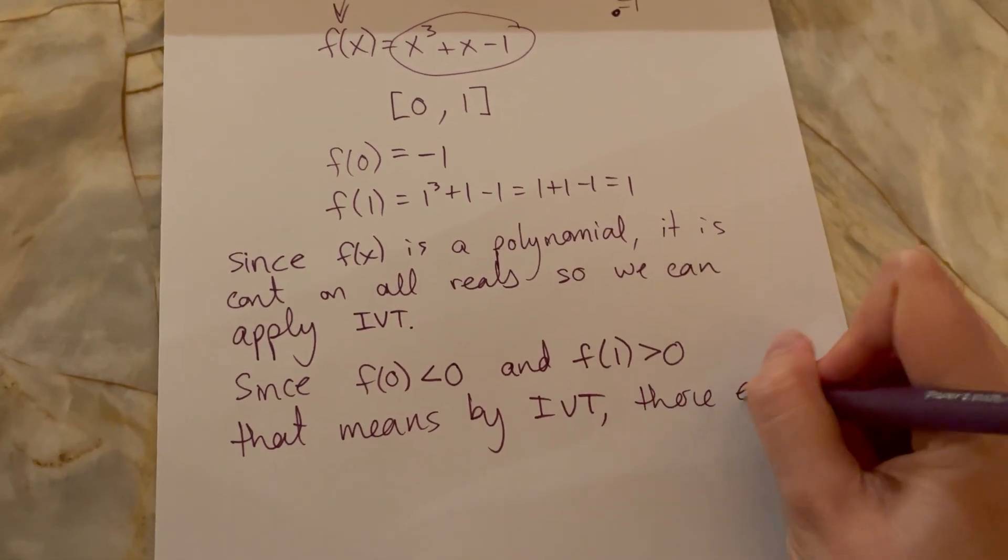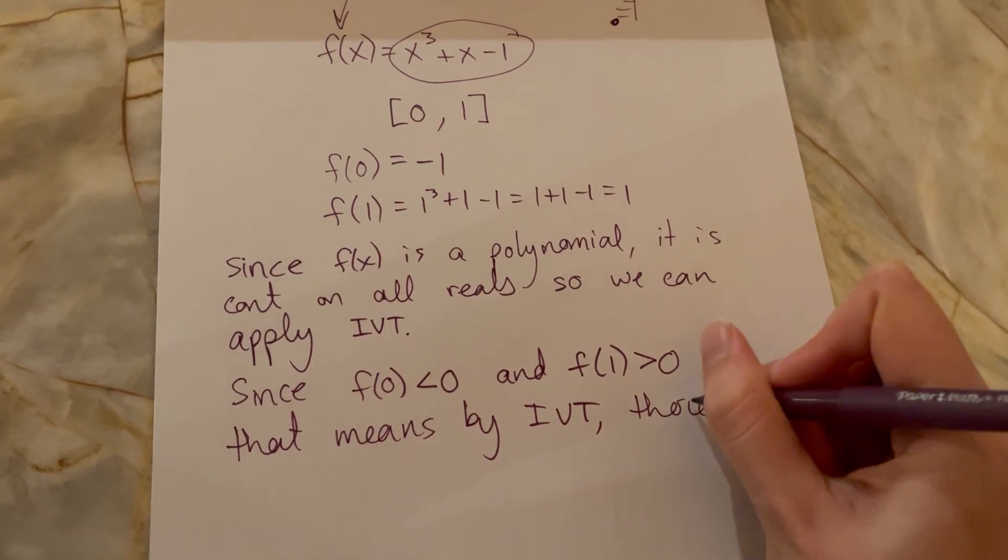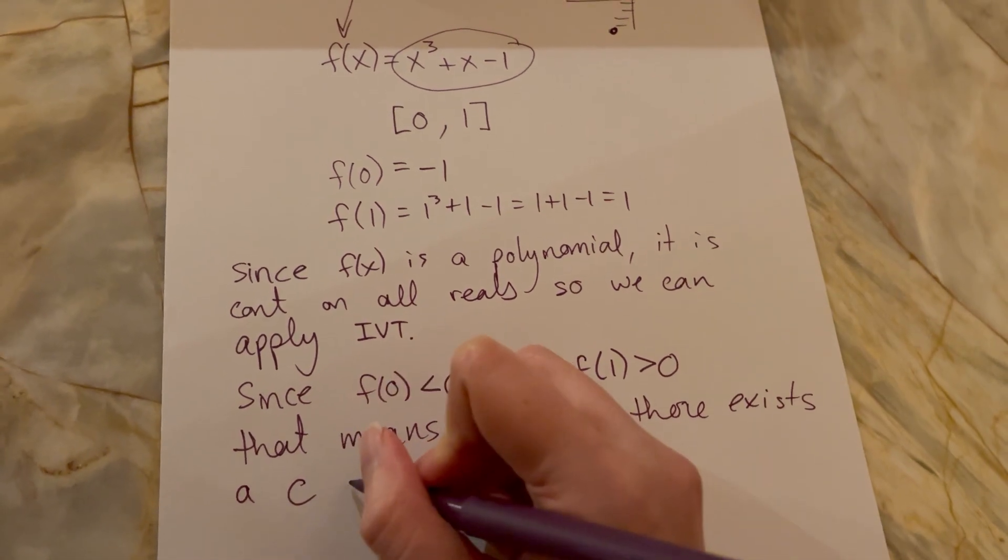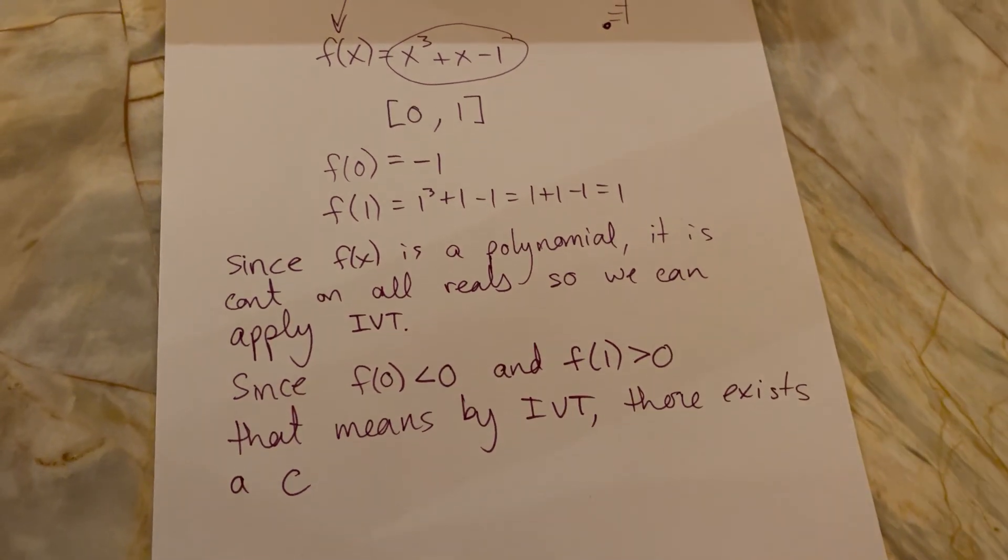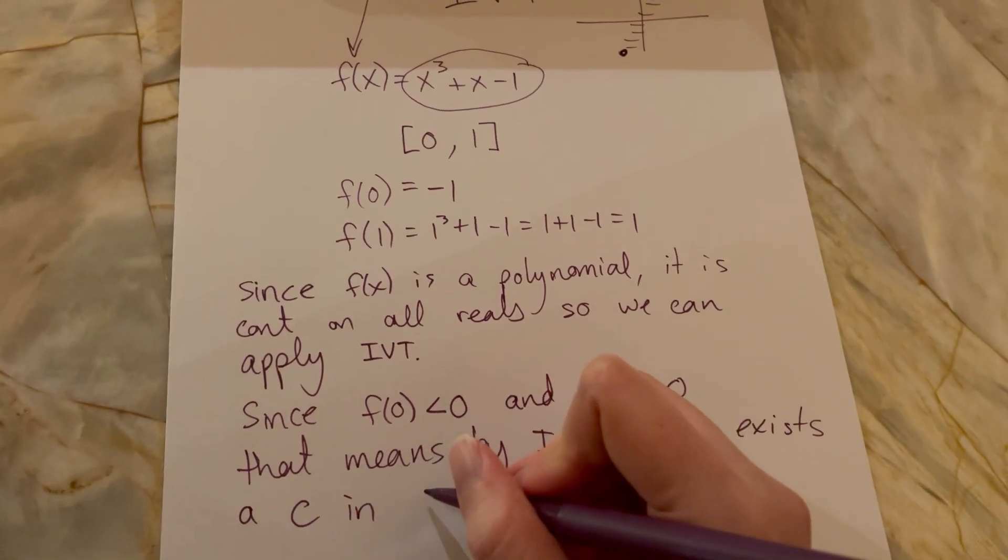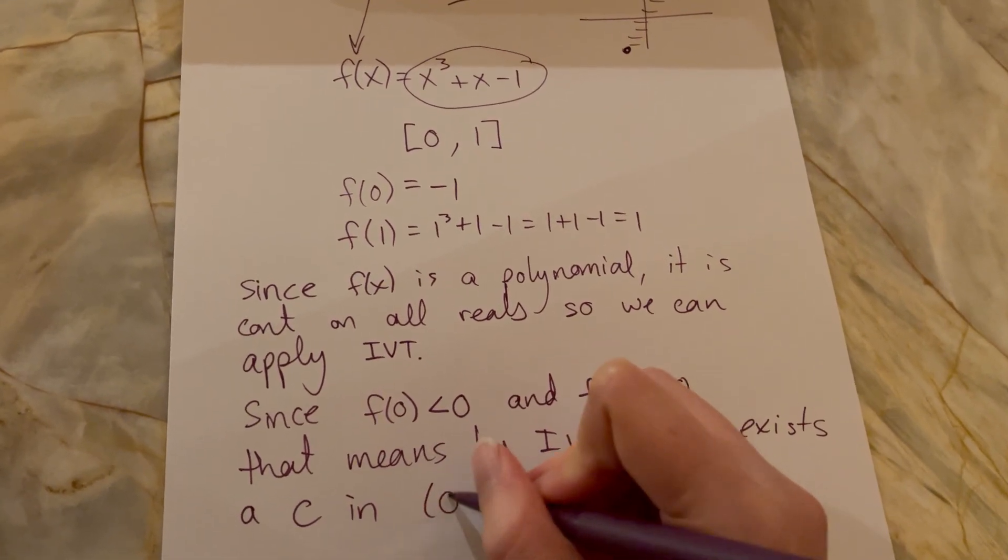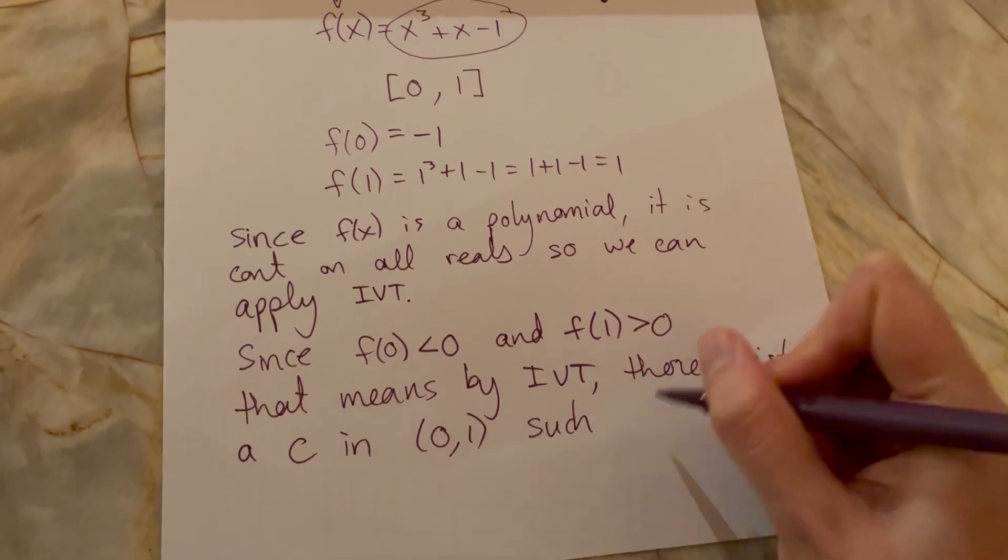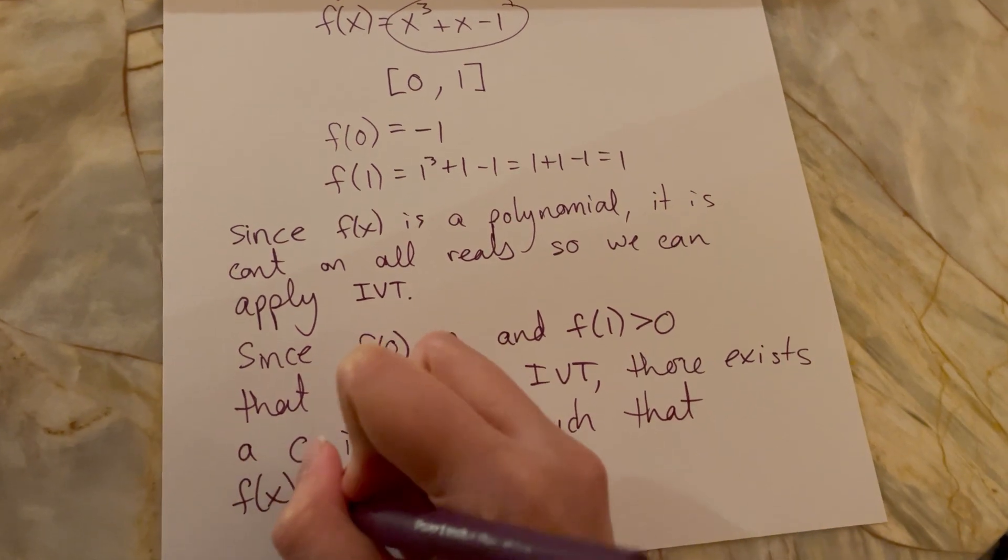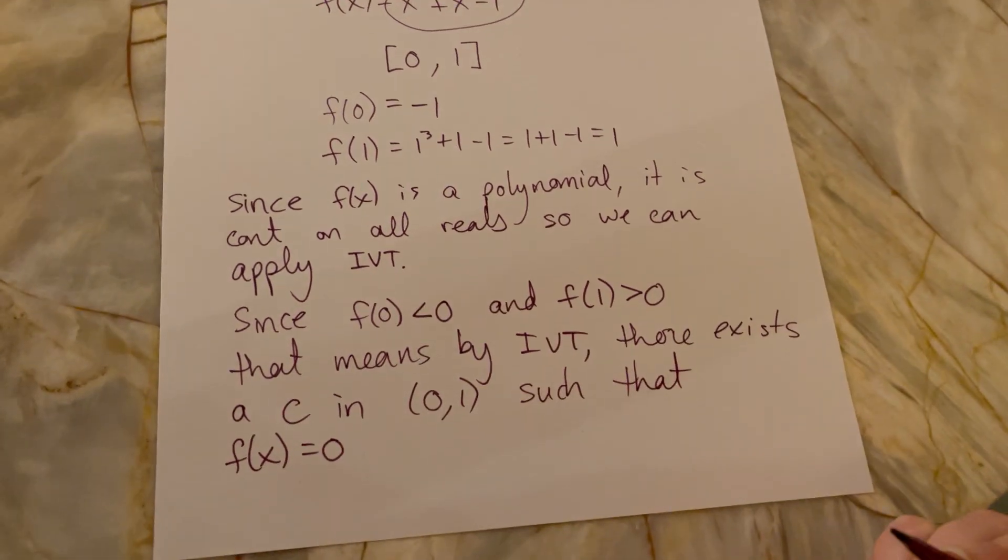There exists a c, usually they call them c, it's an x value c in the interval zero comma one such that f(x) has a height of exactly zero.